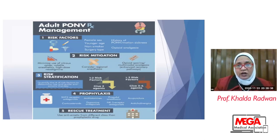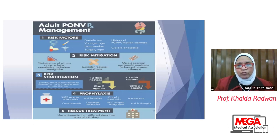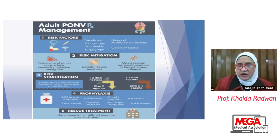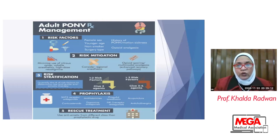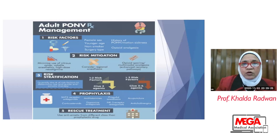When two risk factors are present, we have to give two antiemetic agents. If more than two, we give three to four agents. Prophylaxis is better than treatment. We give prophylaxis using 5-HT3 receptor antagonists, corticosteroids, antihistamines, dopamine antagonists, propofol anesthesia, NK-1 receptor antagonists, acupuncture, and anticholinergics. For rescue treatment, we must introduce a drug not already given in the prophylaxis. If we used two or three agents prophylactically, we have to use another drug class as rescue.